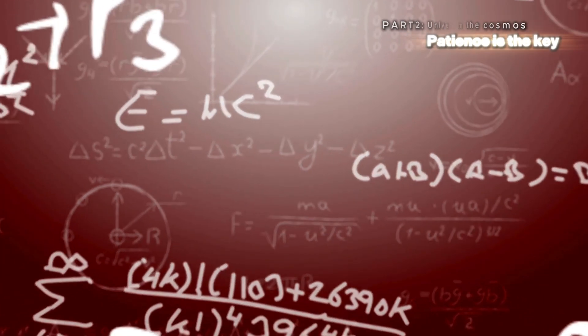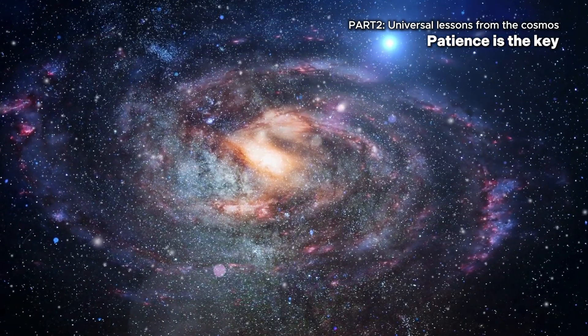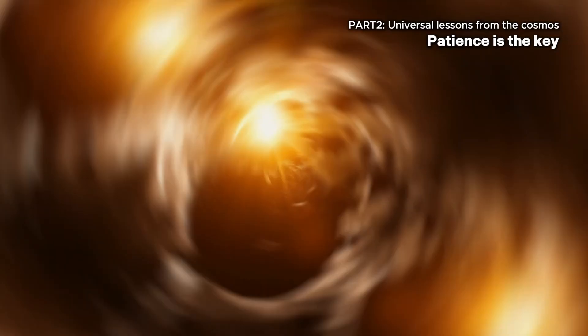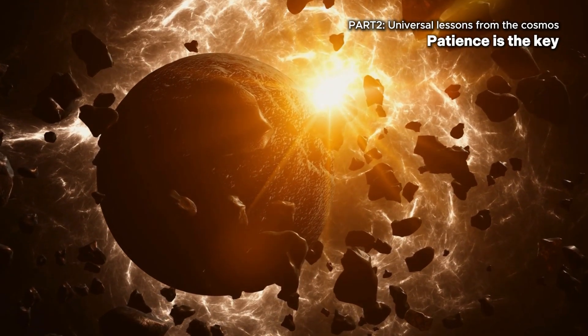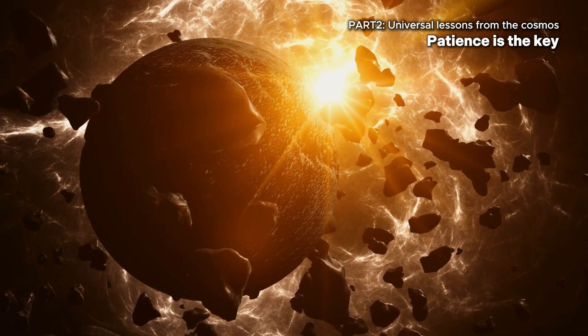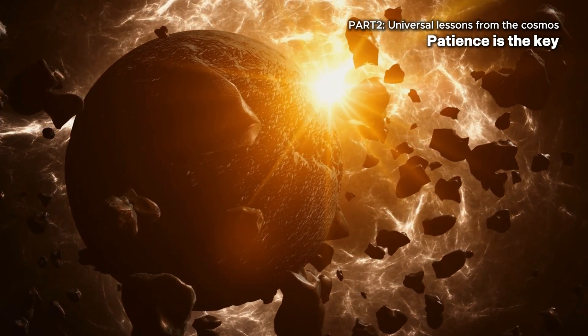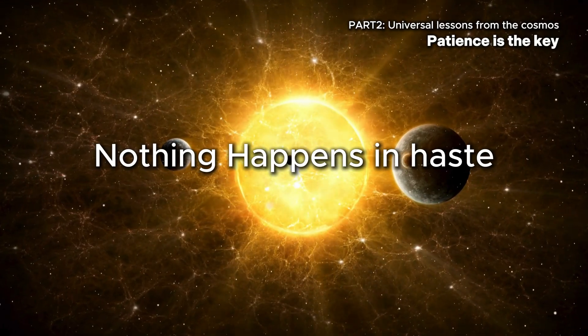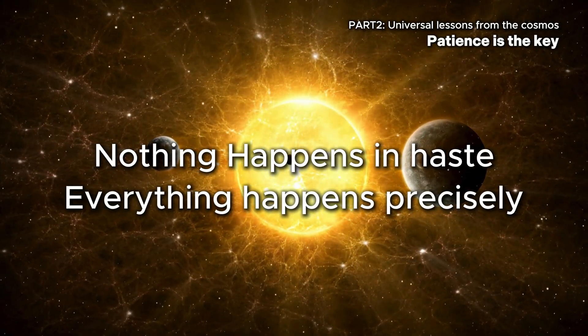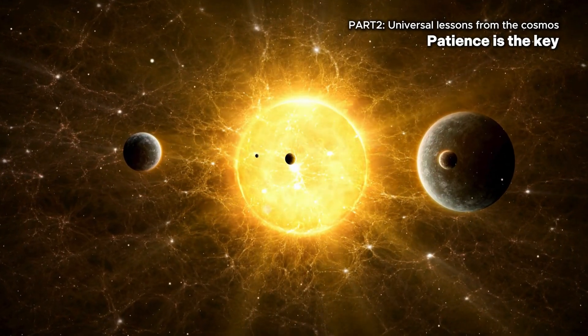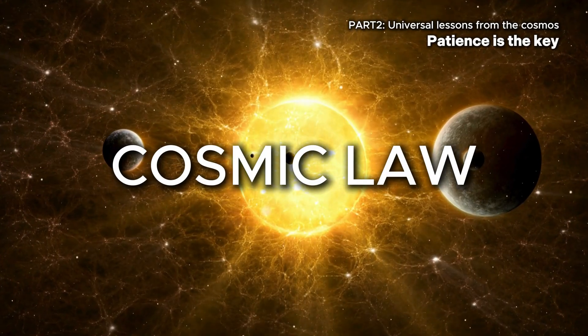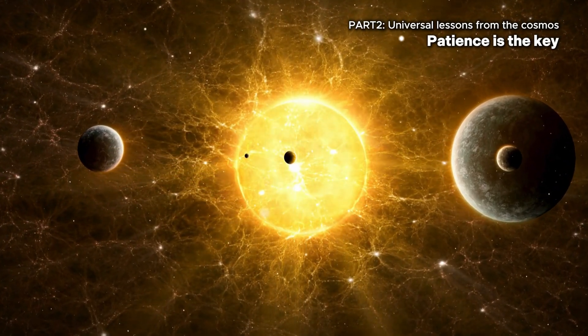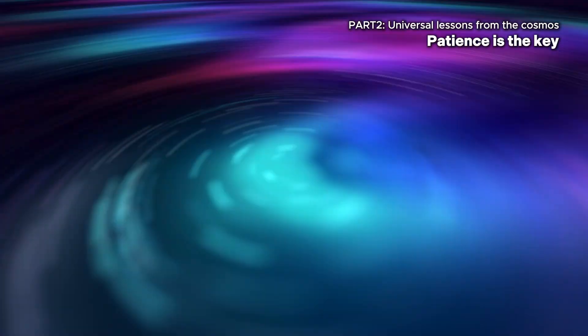Beyond the science and equations, the universe teaches us important, universal, and practical lessons. Everything in our universe happens at a staggering, almost poetic pace. Stars are born over millions of years, not seconds. Continents drift barely a few centimeters each year to shape the face of the Earth over eons. Even light from the most distant galaxies takes billions of years just to reach our eyes. Nothing in the cosmos happens in haste. Yet everything happens precisely when it should. What is it telling us? That patience isn't just a human virtue, it's a cosmic law.